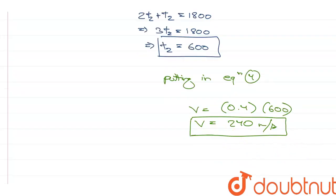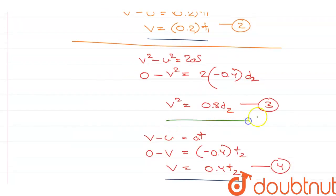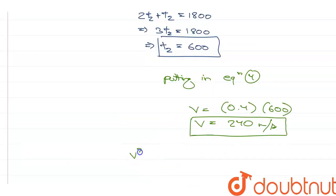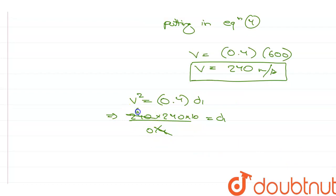Now, if V is equal to 240 meter per second, I can use this value in equation number 1 and equation number 2 to find D1 and D2. So, equation number 1 says V square is equal to 0.4 D1 which means 240 into 240 upon 0.4 is equal to D1. If I remove the point here I have to multiply by 10 in the numerator. 4 times 60 is 240. So, I am left with D1 is equal to 600 into 240.